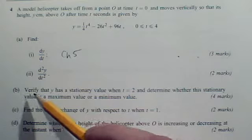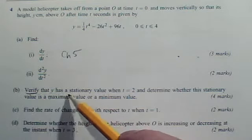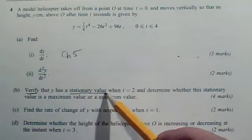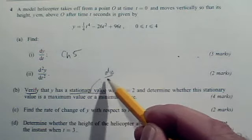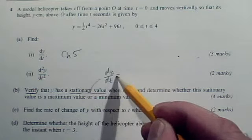Part B. We are verifying that y has a stationary value. Now, stationary value is about dy by dx, or in this case dy by dt, equaling a particular value.